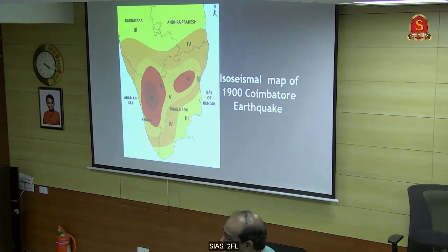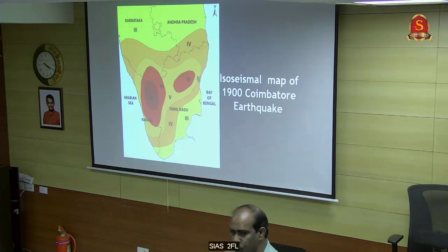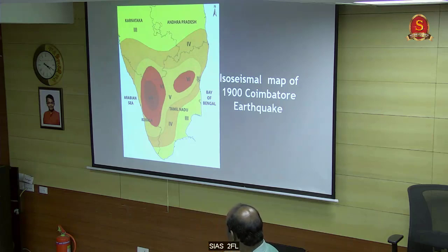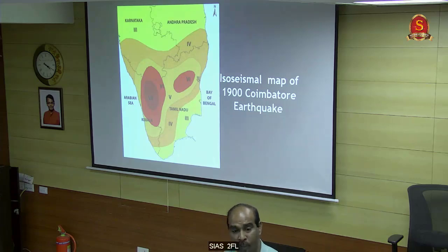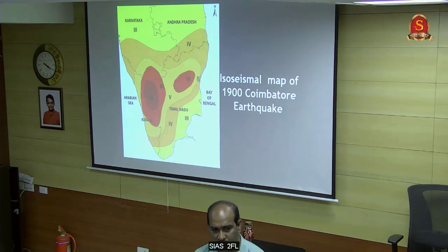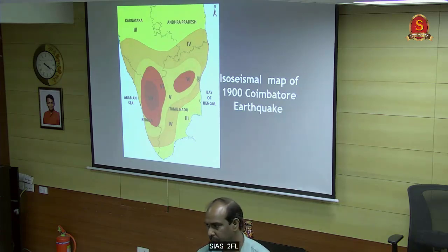This is the 1900 Coimbatore earthquake. When it happened, there was not much instrumentation, but these are felt maps. The earthquake happened at the epicenter, but why is a distant area showing orange and another area showing red? This question concerned many scientists who said we need to do new research in these areas.